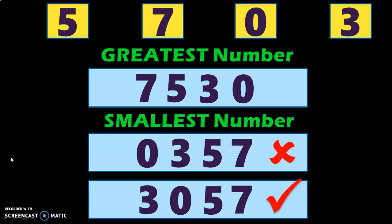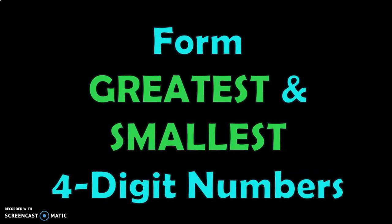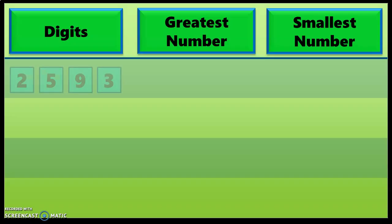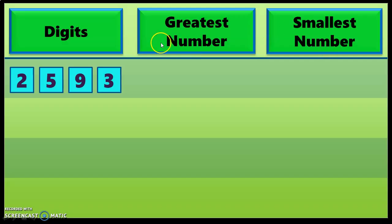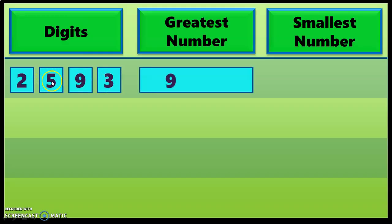Now that we have learnt how to form the greatest and smallest number, let us do some activities. Here I have given four digits: 2, 5, 9 and 3. You will have to form the greatest number and the smallest number. To form the biggest four-digit number, arrange the digits from big to small or in descending order. The biggest number is 9, so first write down 9. The number smaller than 9 is 5, smaller than 5 is 3, and the smallest digit is 2. So the greatest number that can be formed is 9532.